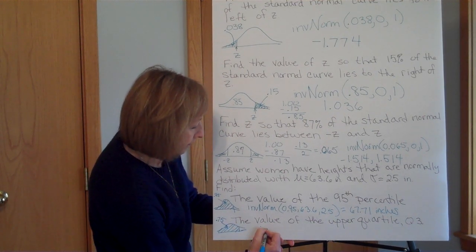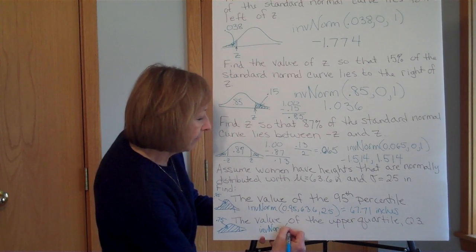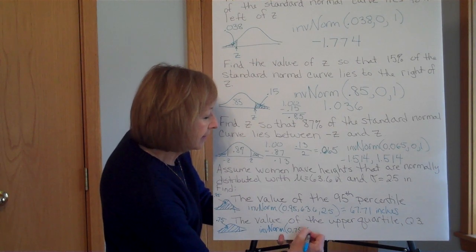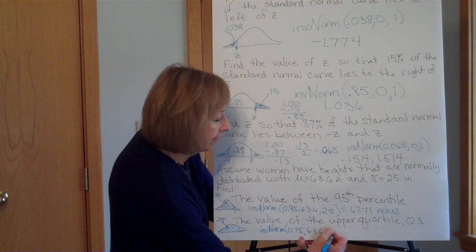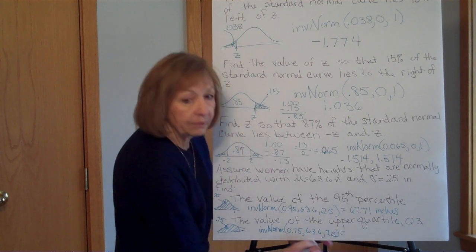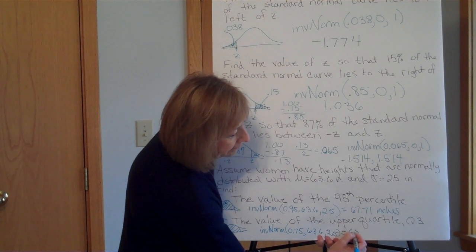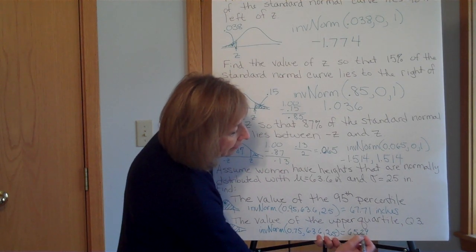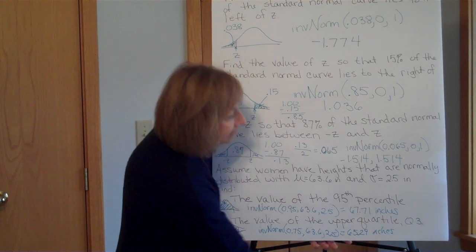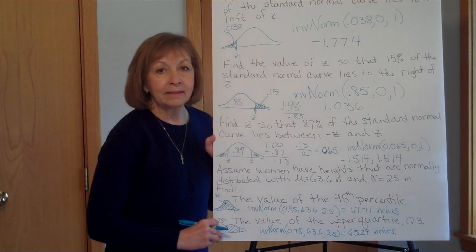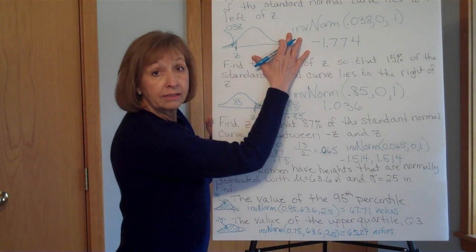So, we want the value so that 75% of the distribution is at or below that value. So we will do inverse norm of 0.75, 63.6, 2.5 and we will get 65.29 inches.